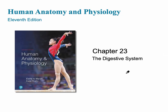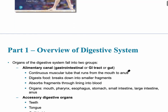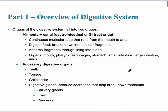The digestive system is a long tube that extends from our mouth to our anus. That long tube is called the alimentary canal, also referred to as the gastrointestinal system, GI tract, or just simply gut. Its main job is that it's a continuous muscular tube that is going to transport what we eat — the foodstuffs — and break them into smaller fragments.